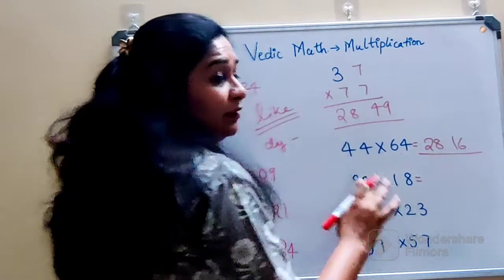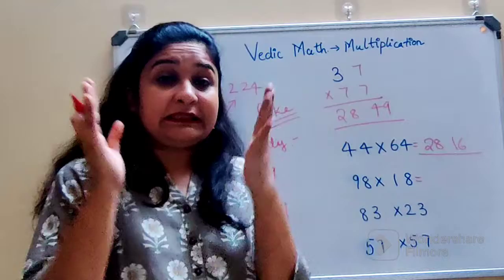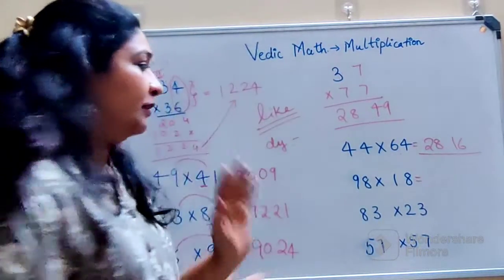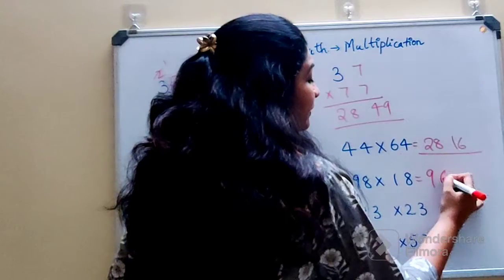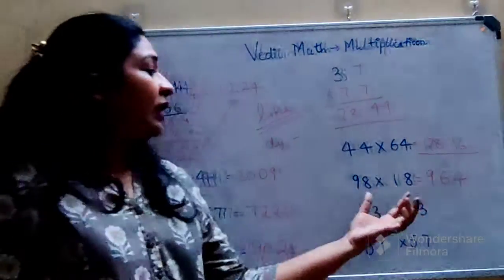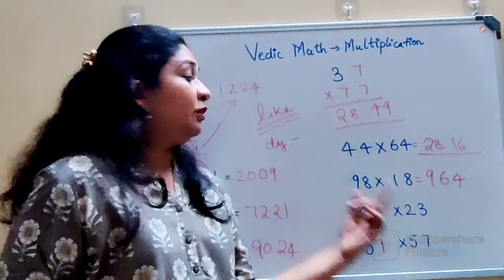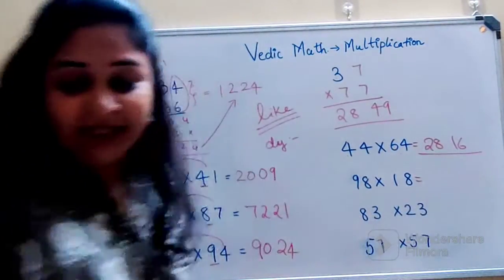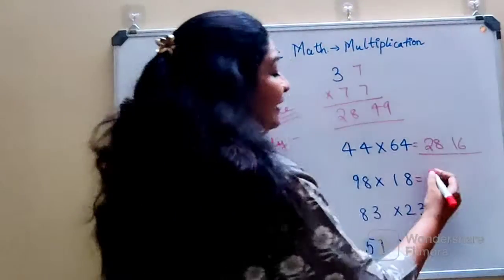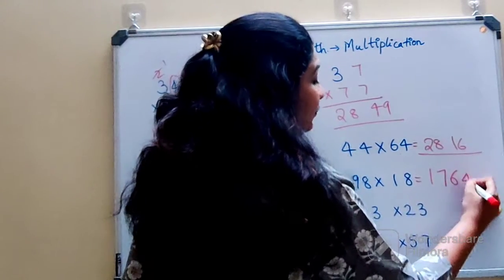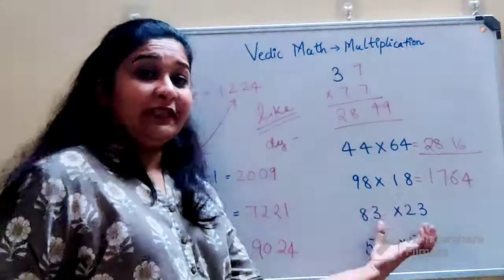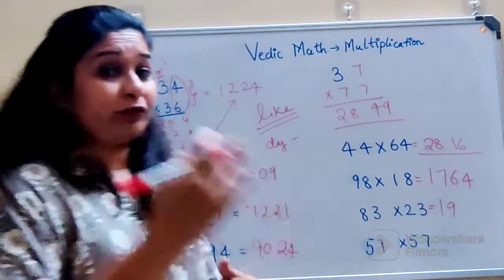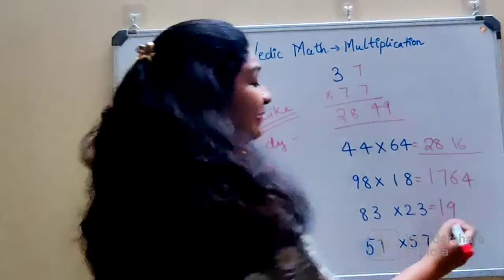So now here we have 9 into 1. Now understand what I said was whenever you get answers in single digit, but if it is the first part of your answer, you don't need to write 0 and you can directly write just 9. So this is 9, and 8 into 8 gets you 64. So now over here what you have is 8 into 2. Sorry, my bad. This is wrong. Actually I forgot we have to add as well, right? So 9 into 1 gets you 9, plus 8 gets you 17. And then 8 into 8 gets you 64. Now again over here, 8 into 2 gets you 16, plus 3 will get you 19. And 3 into 3. Now again, this is the second part of my answer, so I write it in 2 digit form. That will be 09.